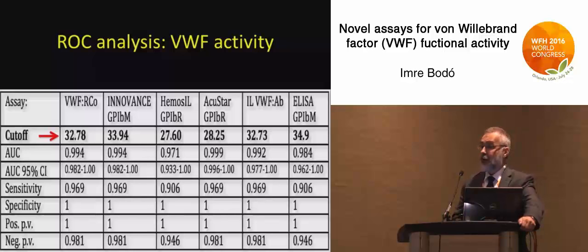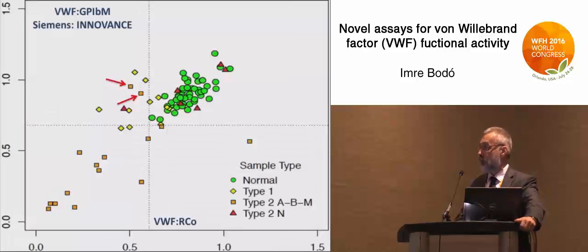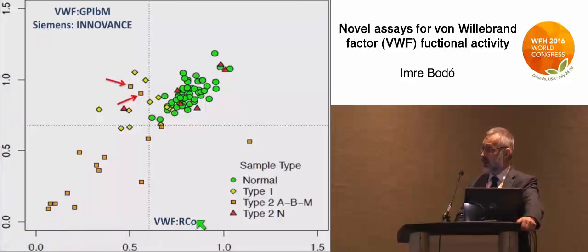The beauty of this exercise is that since you know the molecular changes, you know what the truth is, so you can run an ROC analysis. As expected, for the activity the optimal cutoff is somewhere around 30% between normals and abnormals. For the specific activity — which is a ratio of activity versus antigen, also measured by each laboratory — the cutoff is around 0.6.